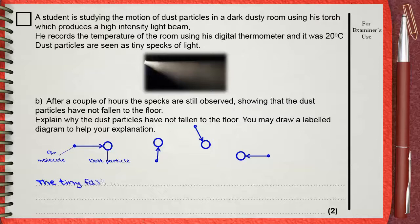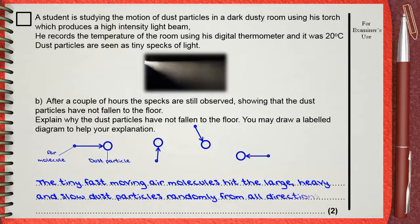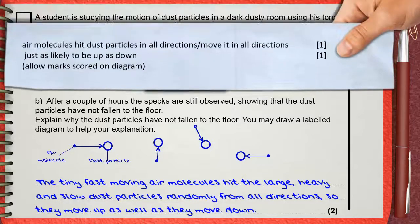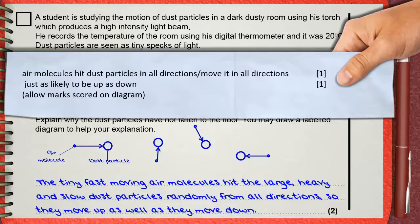The tiny fast-moving air molecules hit the large heavy and slow dust particles randomly from all directions, so they move up as well as they move down. Two marks are awarded: one for air molecules hitting dust particles in all directions, or moving them in all directions; and the second mark for the movement being just as likely to be up as down. The two marks can also be given for a correct diagram.